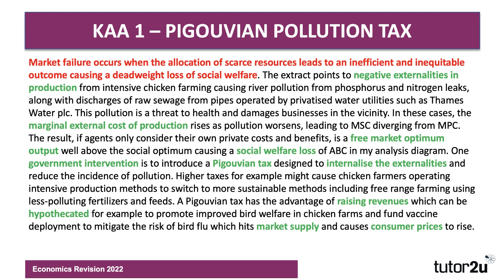Building that explanation: higher taxes on polluting chicken farms might cause some farmers operating intensive production methods to switch to more sustainable methods, including free-range farming using less polluting fertilisers and feeds. A Pigouvian pollution tax also has the advantage of raising revenue, which can be hypothecated or earmarked — for example, to promote bird welfare in chicken farms or fund vaccine deployment to mitigate the risk of bird flu, which hits market supply and causes prices to rise. So the tax can generate revenues for socially beneficial purposes, as well as hopefully causing a change in the behaviour of producers.